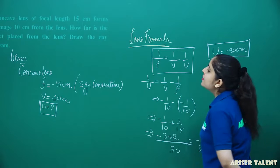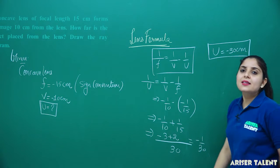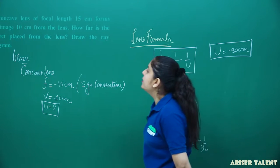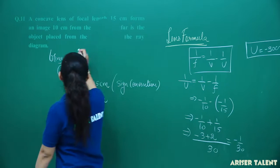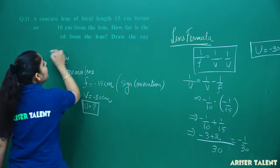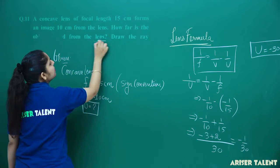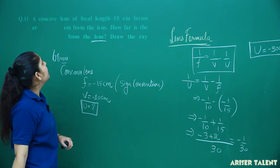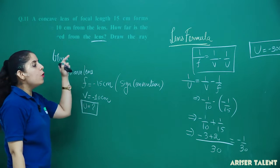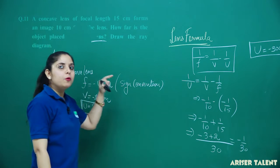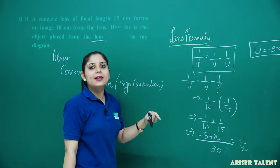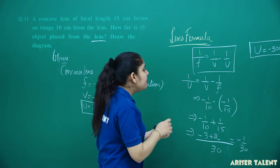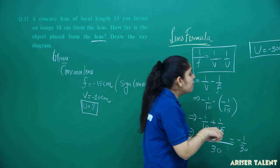This value indicates that the object is placed 30 centimeter from the lens. Now we have to draw the ray diagram for this representation.